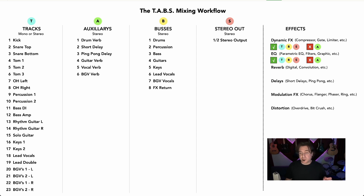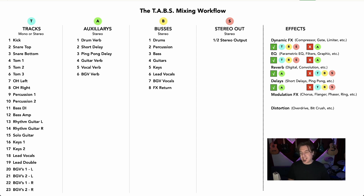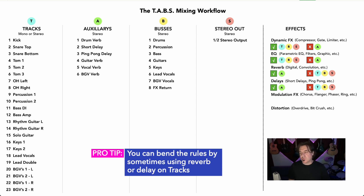Moving to reverb, things switch around a little bit. Reverb should pretty much exclusively be used on auxiliaries — not on tracks, not on buses, and not on a stereo out. Are there times you can bend that rule? Of course — if you're going to bend it, you'd only bend it really at the track level. But nine times out of ten, you're going to use an auxiliary to reverberate your track. The same holds true for delays — likely you're going to use an aux send to send a portion of that signal to your delay and have it return to your aux return, or in Logic, a bus effects return. You would generally never delay a bus or a stereo out.